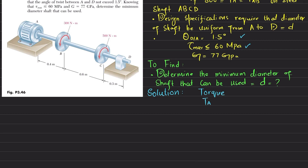The torque at point A is 800 N·m. The torque in shaft AB equals T_A. If you cut the shaft in segment AB, the applied torque of 800 N·m is clockwise, so the reaction is counterclockwise. Therefore T_AB equals 800 N·m.